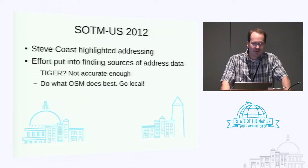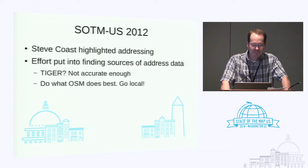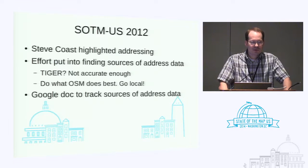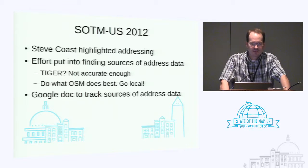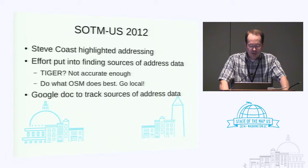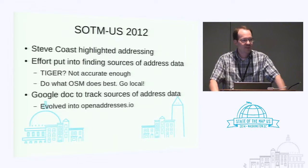So we decided to do what OSM does best and go local, start talking to cities and counties. Ian actually set up a spreadsheet in Google Docs to track various sources of information that we could find. And I think that kind of eventually evolved into this open address concept.